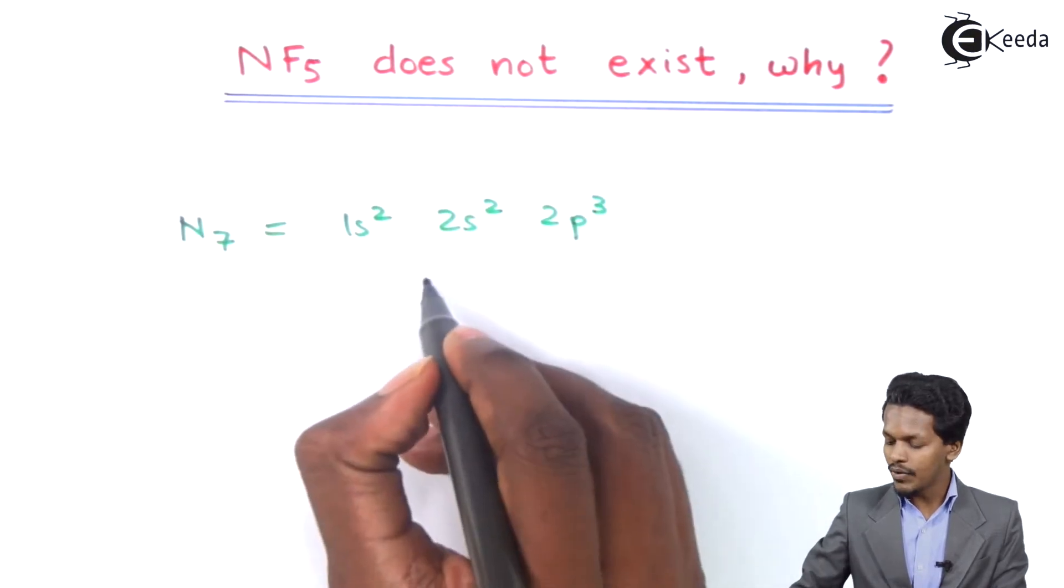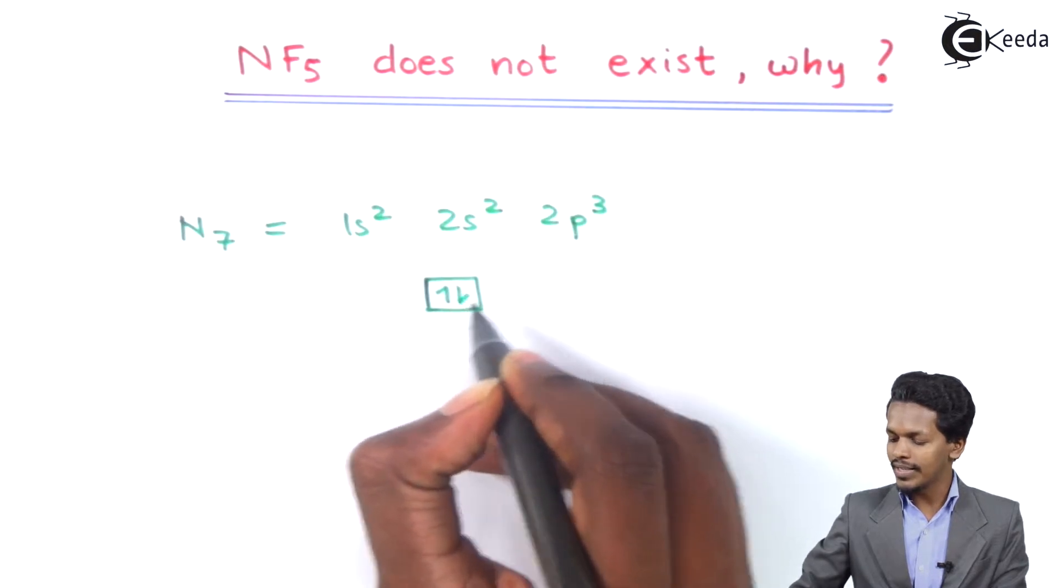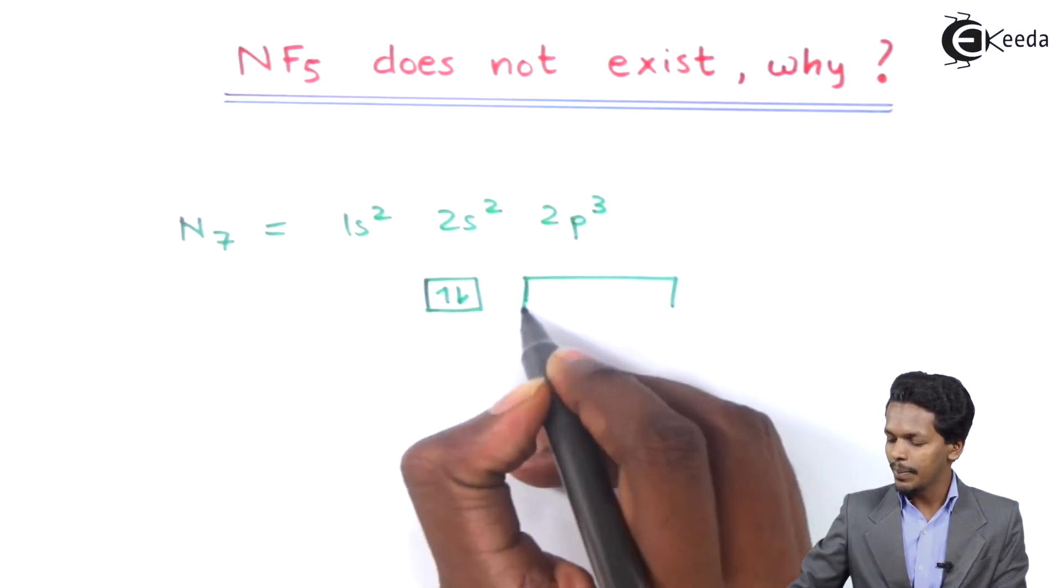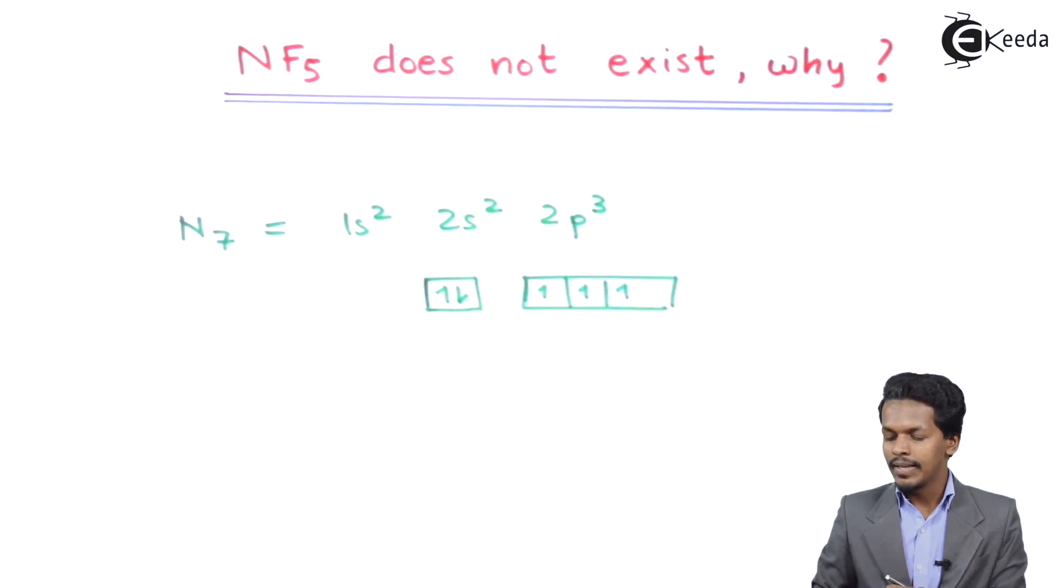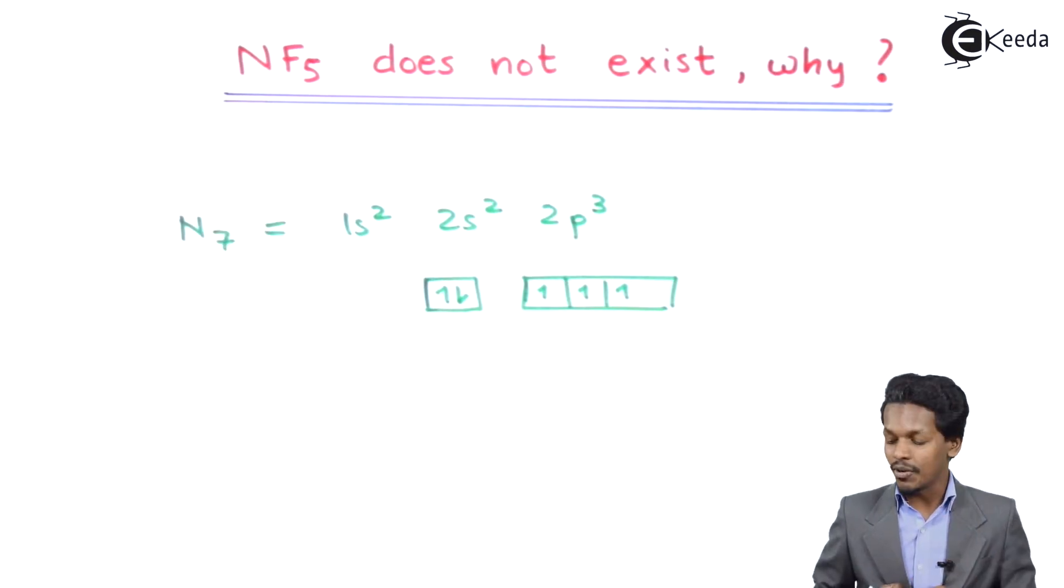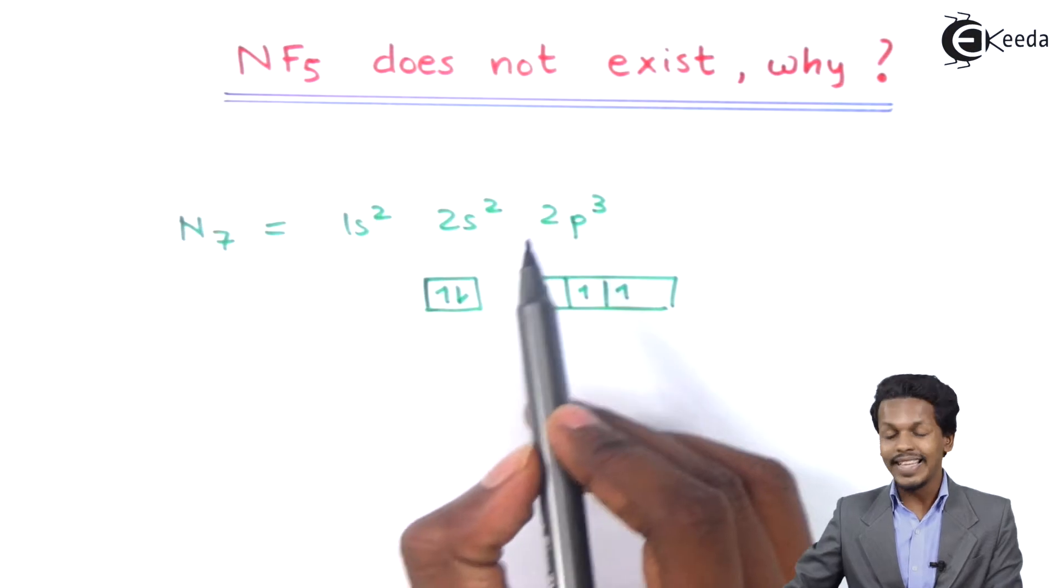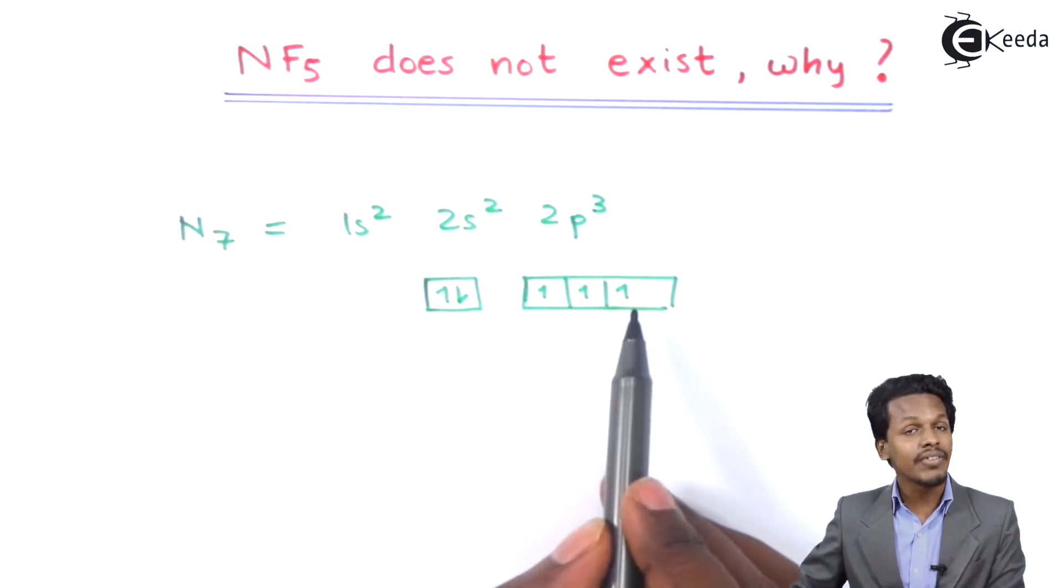If we talk about the electrons, the s orbital consists of 2 electrons and the p orbital consists of 3 electrons - that's 1, 2, and 3. To form NF5 as a molecule, we need 5 unpaired electrons. But the unpaired electrons present are only 3.